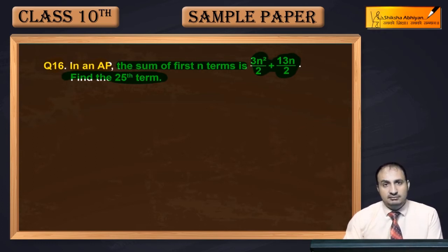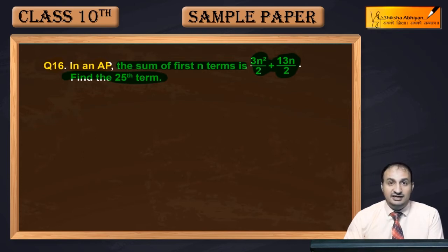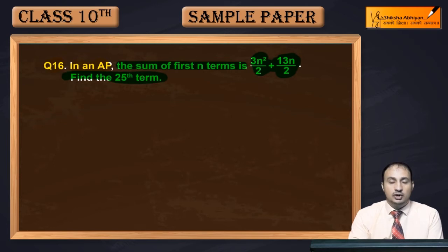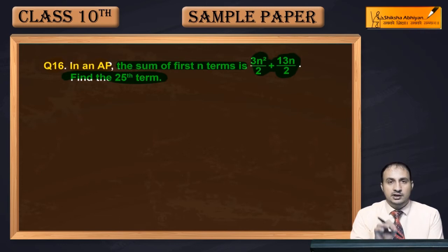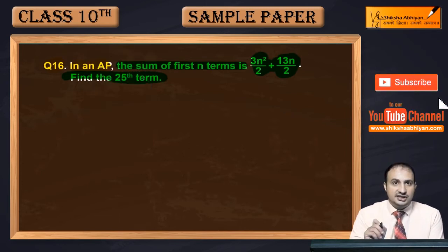We don't need to find the first term 'a' or the common difference 'd' separately. There is a small concept that applies here. When a question gives you the sum of first n terms and asks for a particular term, you can solve it in two ways. I'll show you both methods.